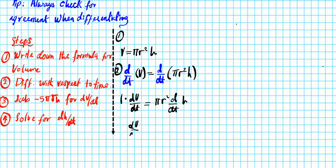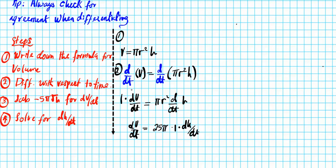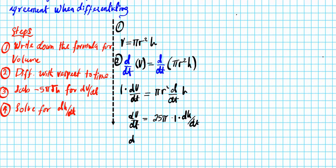Now we have dv/dt equals — what is r? r is always 5, so we can plug that in: 25π. Now, do h and t agree? The answer is no. So what are we going to do? Differentiate h first — just like differentiating x gives 1 — and then we add dh/dt because of the disagreement between these two variables, just as we did with the v situation. So we can write this as dv/dt = 25π dh/dt.